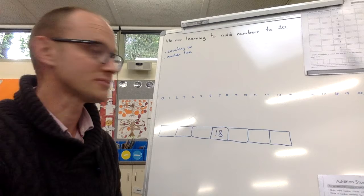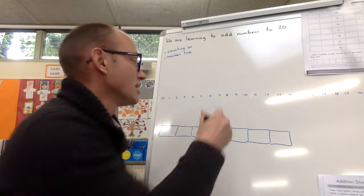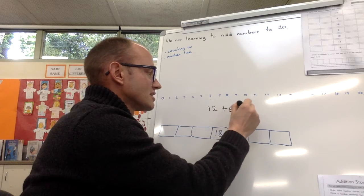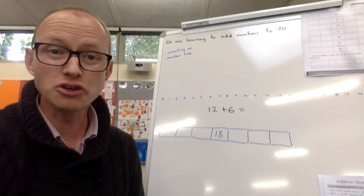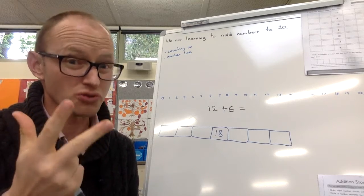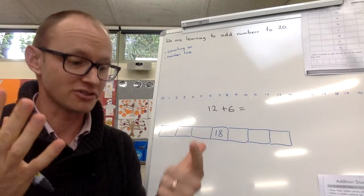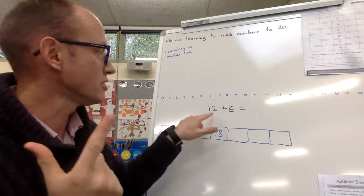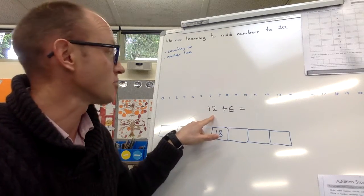So first question, normally I'd ask you to choose a number, but I'm going to choose it for you this time, so 12 plus 6 equals. So I'm using counting on, so I don't need to start from zero and count all the way up to 12. I don't need to do it because 12 is always 12, so I can count on from 12.